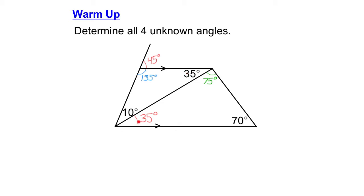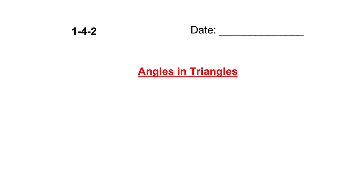So they're both the same — that's how I know this is 35 degrees. And then, inside my triangle, the total has to be 180 degrees. So 70 plus 35 is 105 degrees, and I have 75 degrees left over. And that leads into this lesson: angles in triangles.